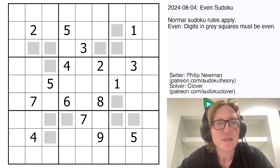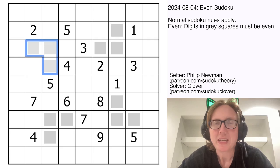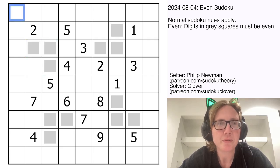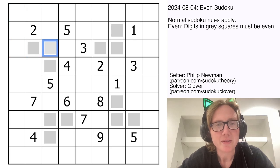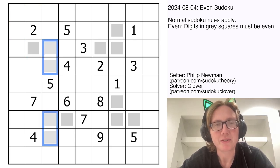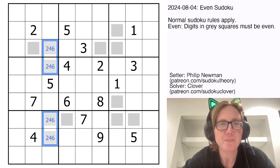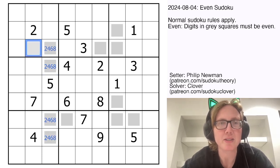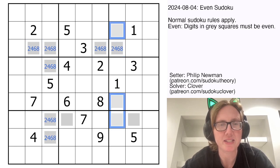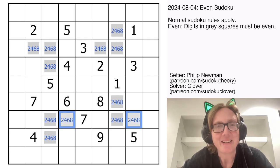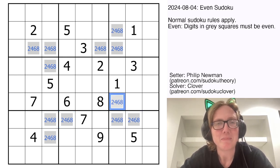So gray squares contain even digits, and other than that we just have normal Sudoku rules, so digits 1 through 9 are going to appear once each in each row, each column, and each 3 by 3 region. So we have some columns and some rows that have four even digits, and that's the total number of even numbers in a Sudoku, so we can go ahead and just mark those as our four even digits: 2, 4, 6, and 8.